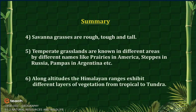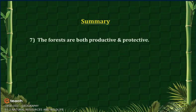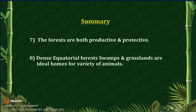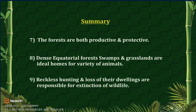Along altitudes, the Himalayan ranges exhibit different layers of vegetation from tropical to tundra. The forests are both productive and protective. Dense equatorial forests, swamps and grasslands are ideal homes for a variety of animals. Reckless hunting and loss of their dwellings are responsible for the extinction of wildlife.